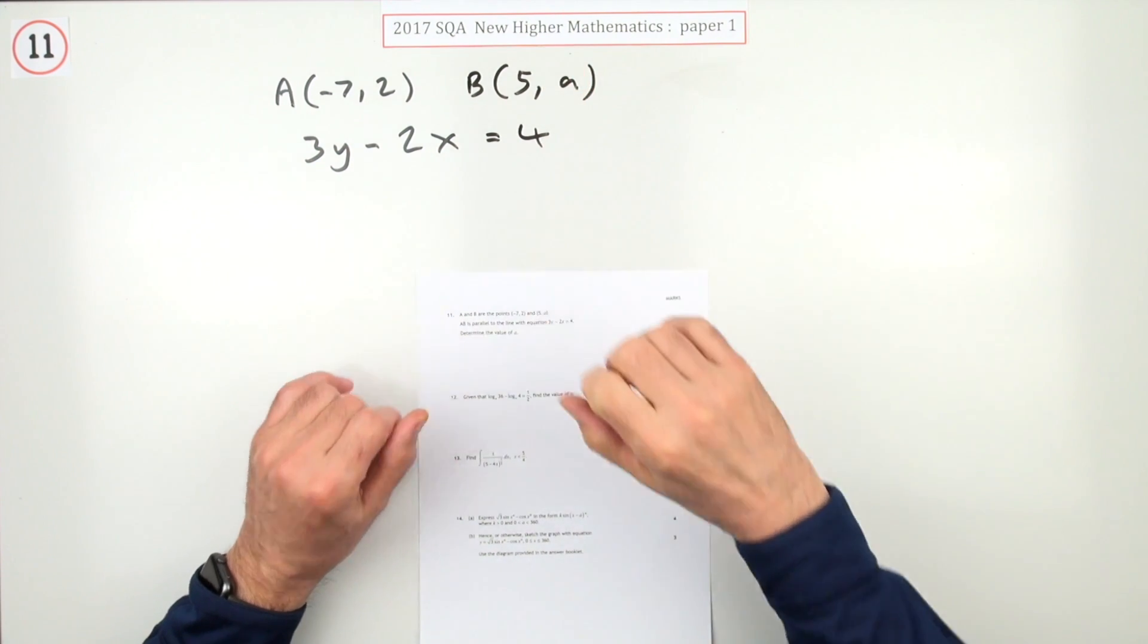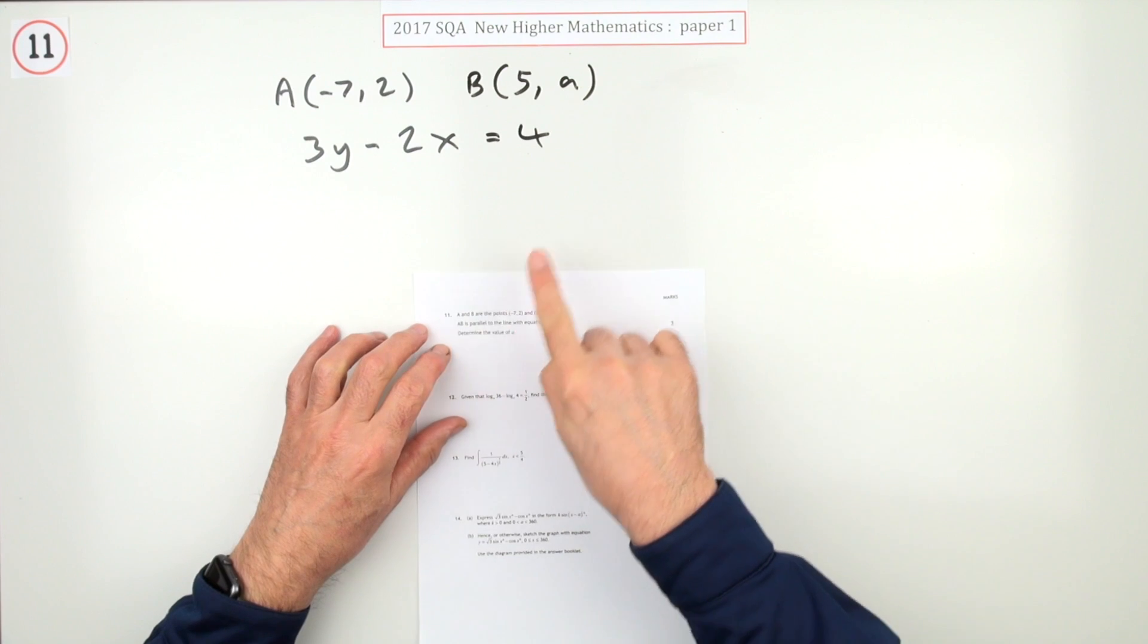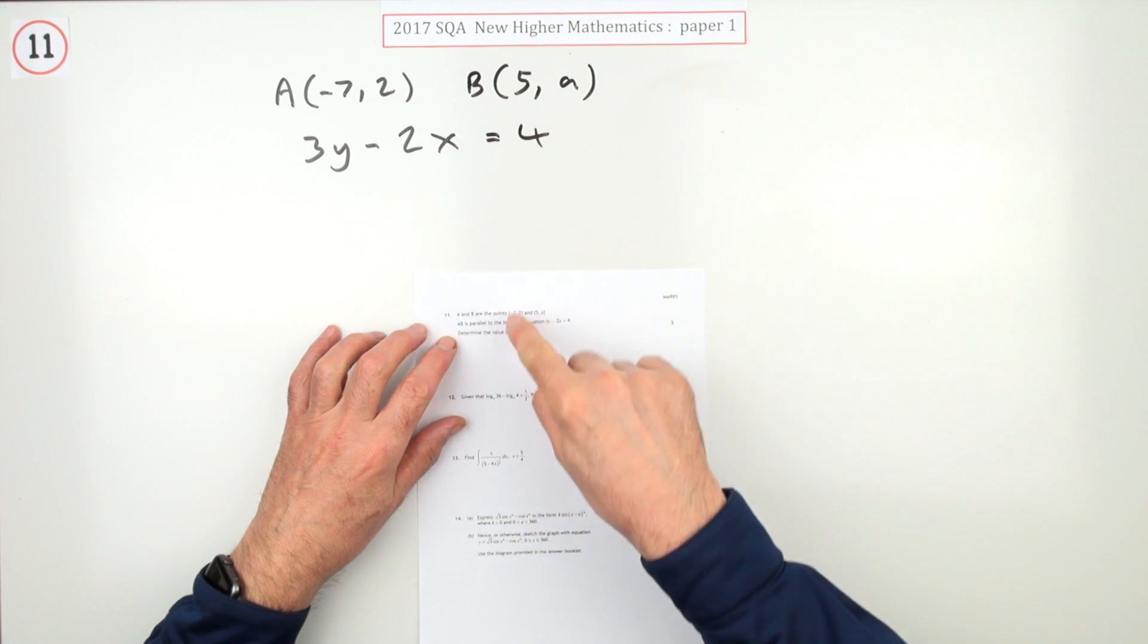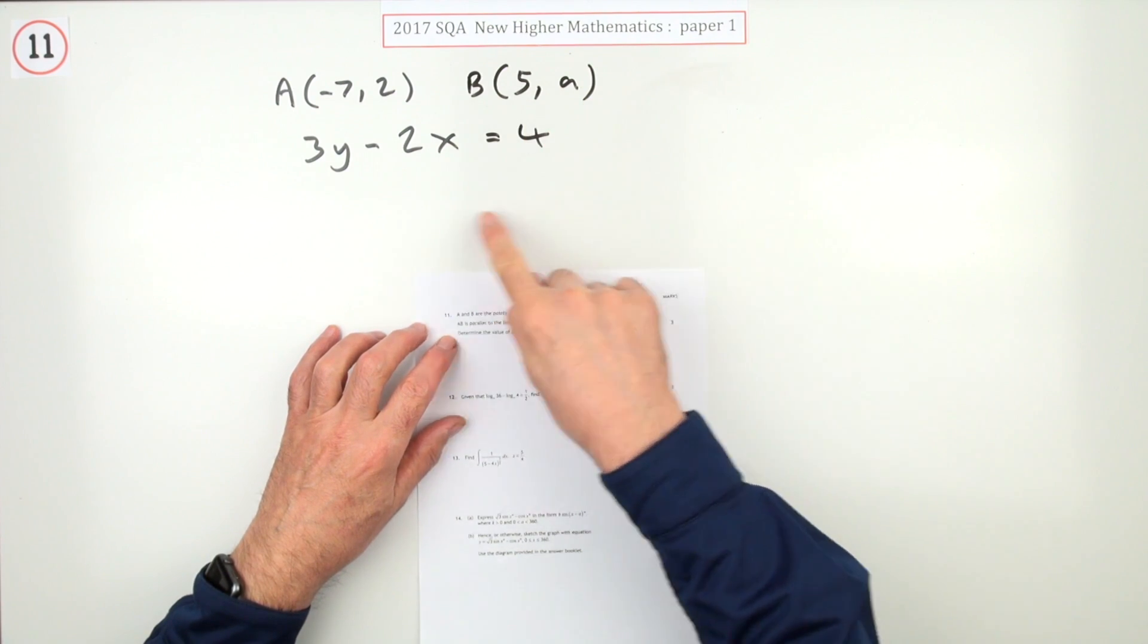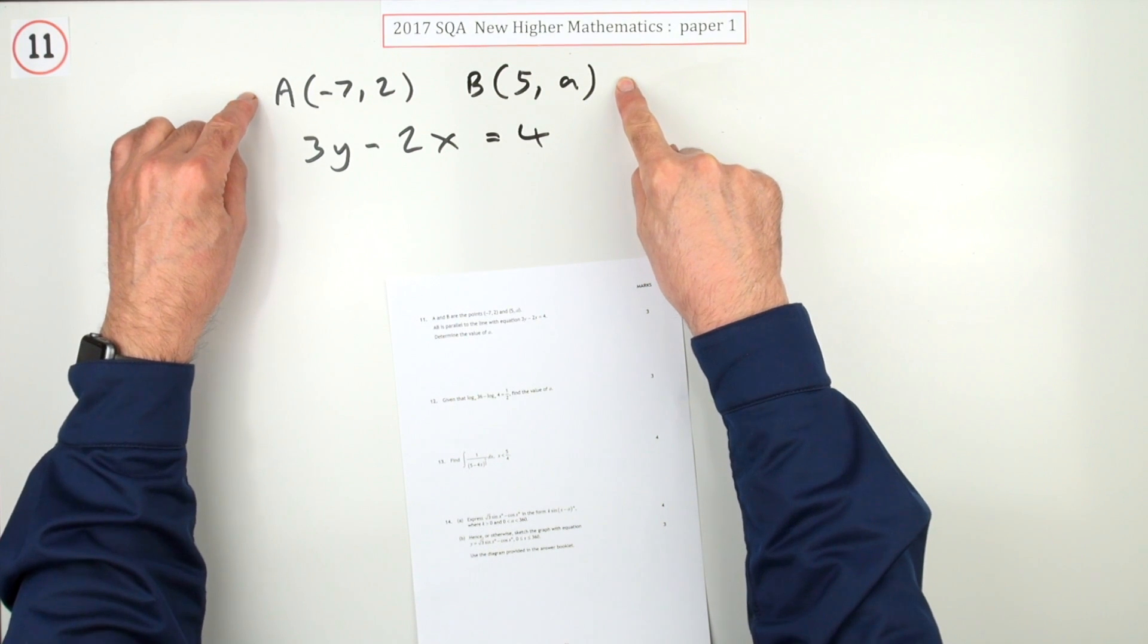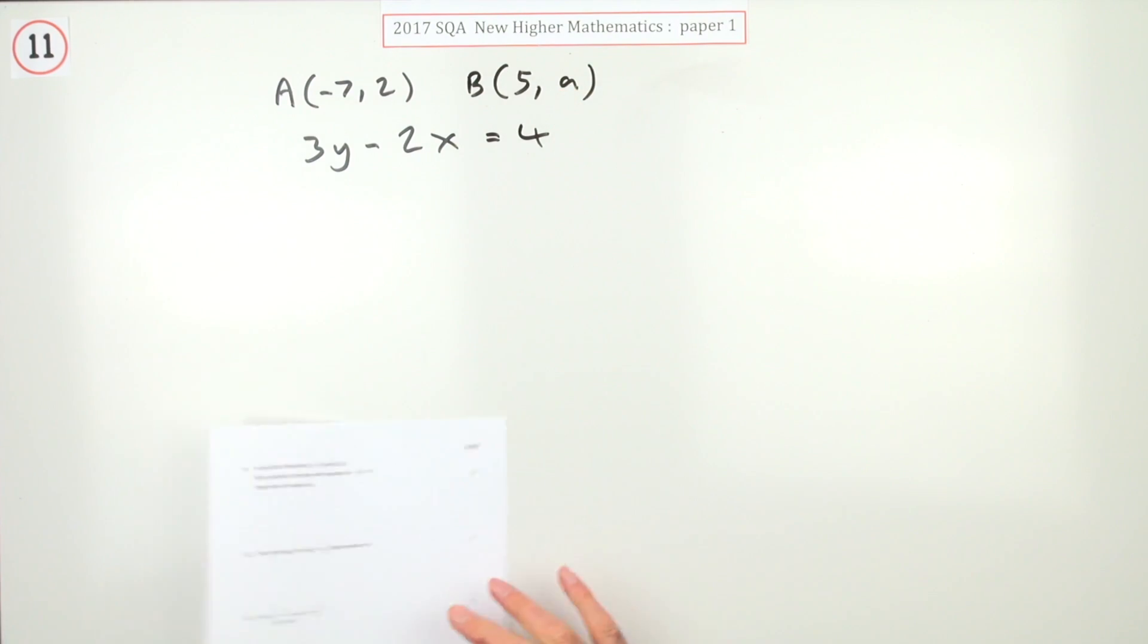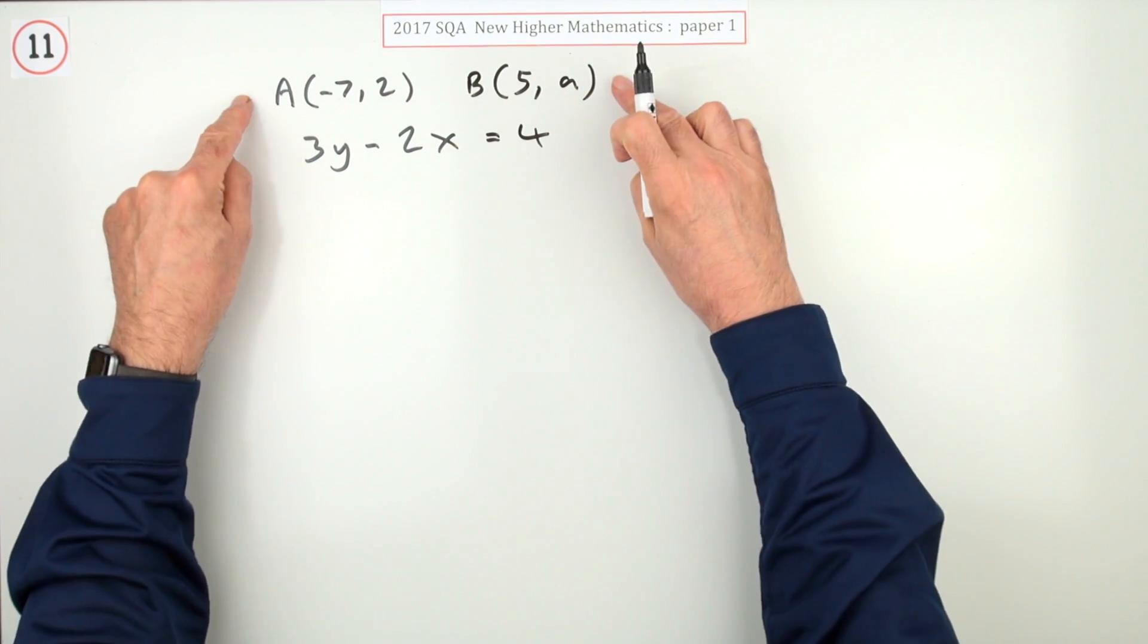Number 11 from paper 1 of the 2017 New Higher. Three marks for this question. It looks as if it's to do with gradients, talking about something being parallel to this line. These two points form a line segment which is parallel to this line. If so, what's the value of a?